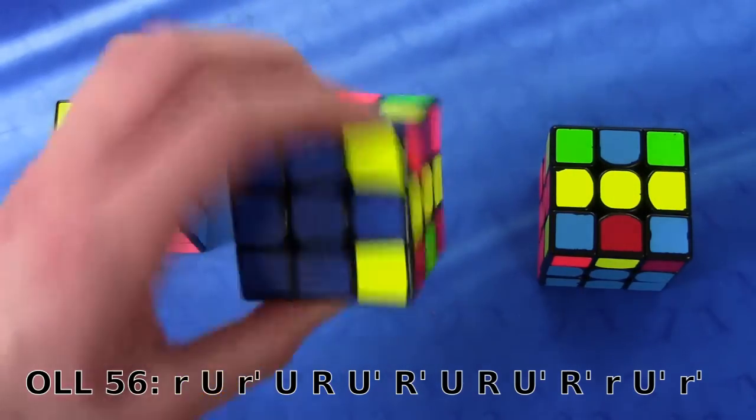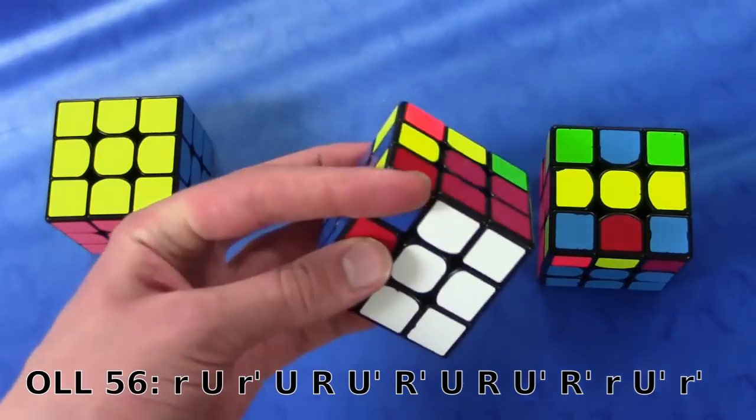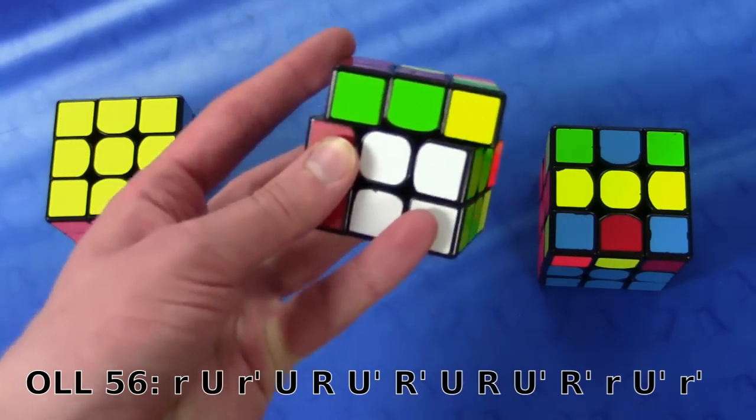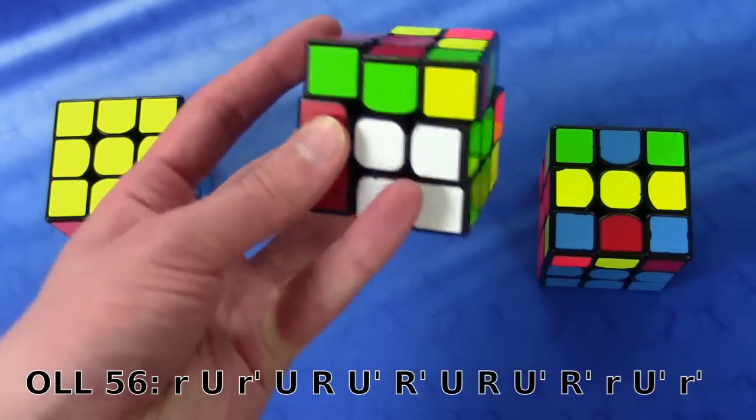Pinky in the middle of both layers like this, and then U with my index in the front. Now I'm going to use my pinky to do the R wedge prime in the middle of both layers.